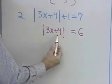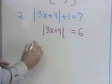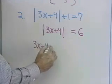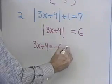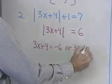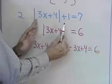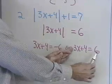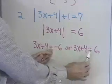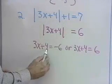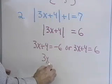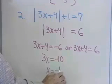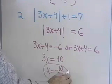The only way the absolute value of 3x plus 4 can be equal to 6 is if 3x plus 4 is negative 6, or 3x plus 4 is equal to positive 6. Those are the only two numbers whose absolute value is 6. Solving this equation, I add negative 4 to both sides and end up with negative 10. Divide both sides by 3, and I get x is equal to negative 10 thirds.